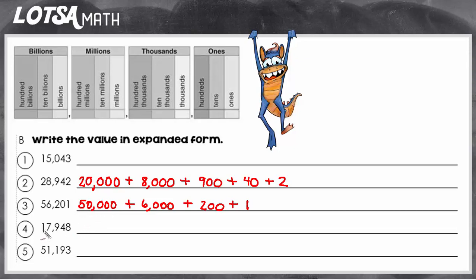We'll do one more. Look at number 4. We have a 1 in the ten thousands place. So that's going to be worth 10,000. Now we have a 7 in the thousands place. So that value is going to be 7,000.